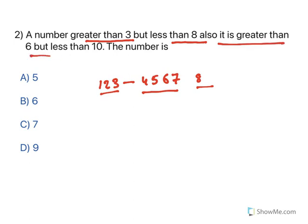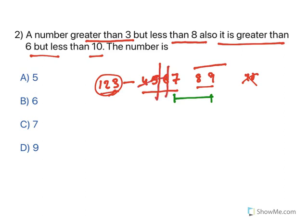Also, the number is greater than 6 but less than 10. Greater than 6 means it starts from 7: 7, 8, 9. You cannot take 10. Now read the question properly — greater than 3 and less than 8 eliminates everything except 4, 5, 6, 7. Greater than 6 further eliminates 4, 5, and 6. What are you left with? Only 7. It is a word play — you need to understand the question properly and you can solve it easily. So the answer is C: 7.